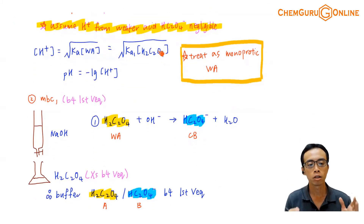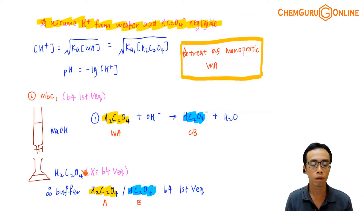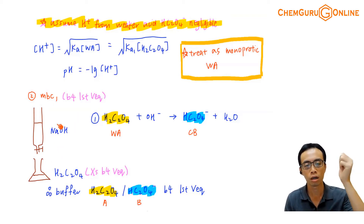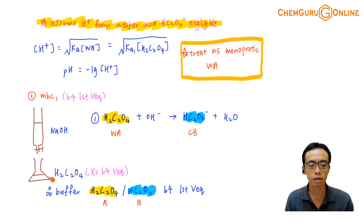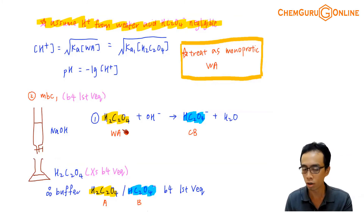Now during reaction number 1, remember the scenario is: I'm titrating a strong base with H₂C₂O₄, which is a weak acid. The weak acid is in the conical flask; the strong base is in the burette. If I have a weak acid in the conical flask and strong base in the burette, the weak acid will be in excess before complete neutralization, so I'll have a buffer before VEQ. The buffering system will be a mixture of H₂C₂O₄ and HC₂O₄⁻ — my weak acid and the conjugate base.